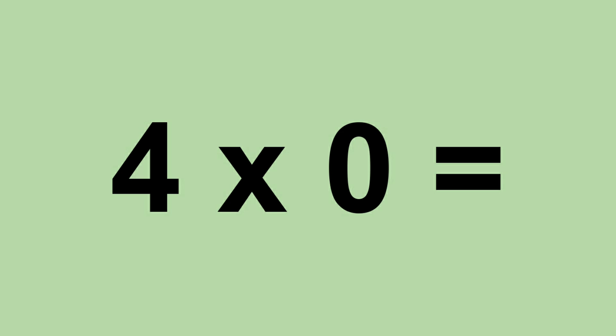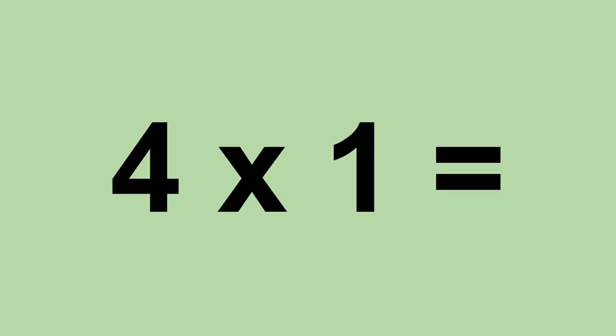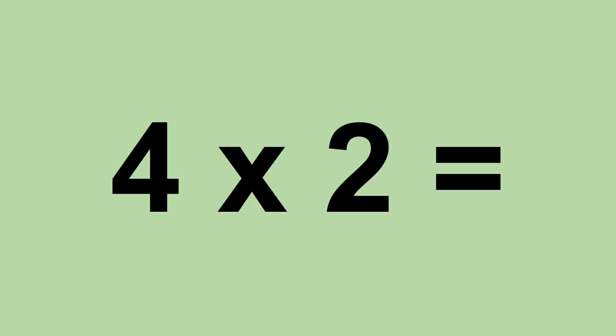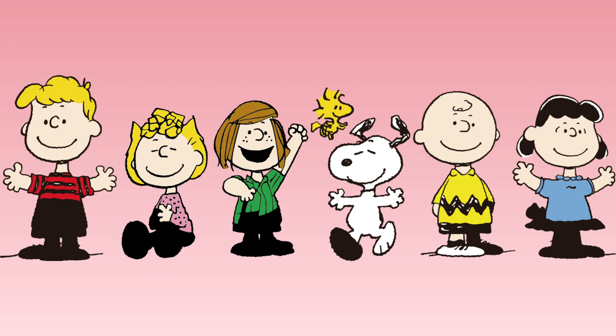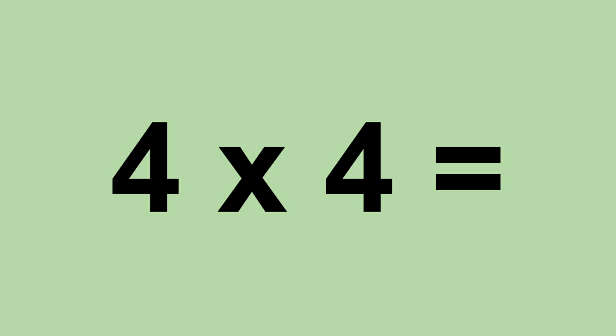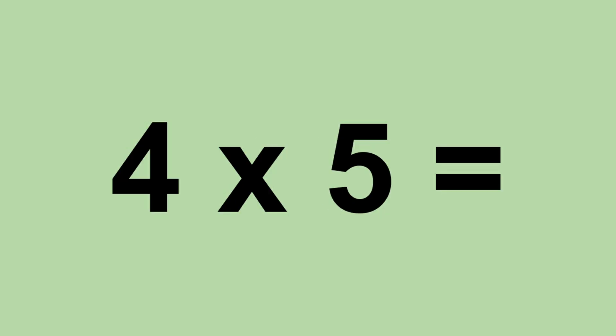4 times 0 equals 0. 4 times 1 equals 4. 4 times 2 equals 8. 4 times 3 equals 12. 4 times 4 equals 16. 4 times 5 equals 20.